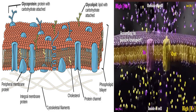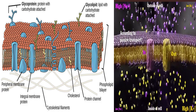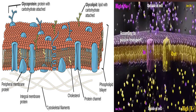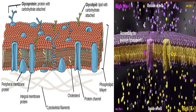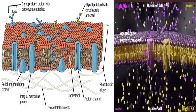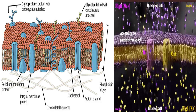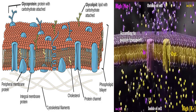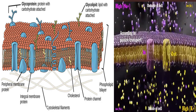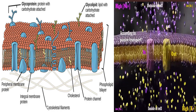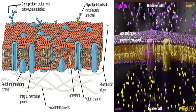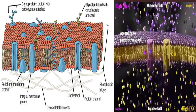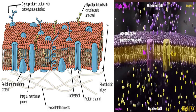Proteins make up the second major component of plasma membranes. Integral proteins, as their name suggests, are integrated completely into the membrane structure, and their hydrophobic membrane-spanning regions interact with the hydrophobic region of the phospholipid bilayer. Single-pass integral membrane proteins usually have a hydrophobic transmembrane segment that consists of 20-25 amino acids. Some span only part of the membrane, associating with a single layer, while others stretch from one side of the membrane to the other and are exposed on either side. Carbohydrates are the third major component of plasma membrane; they are always found on the exterior surface of cells and are bound either to proteins or to lipids forming glycolipids.